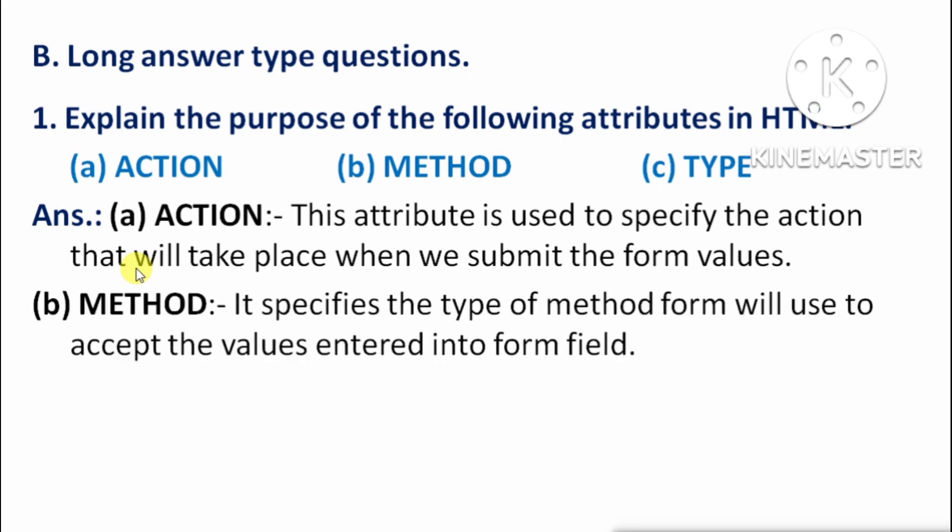Next is 'method': It specifies the type of method the form will use to accept the values entered into the form field — yeh attribute specify karta hai ki form kaunse method ka use karega un values ko accept karne ke liye jo form field mein enter ki gayi hain.